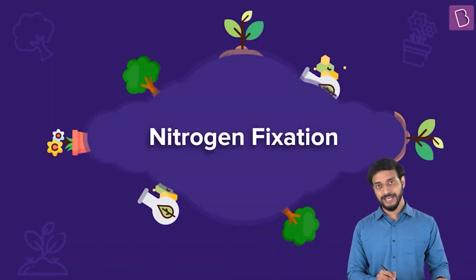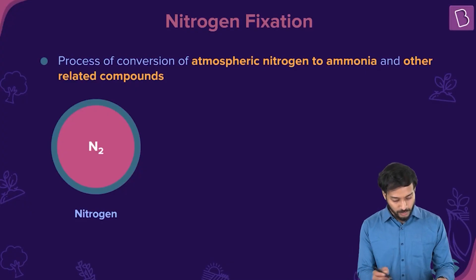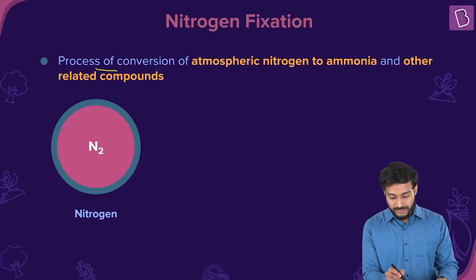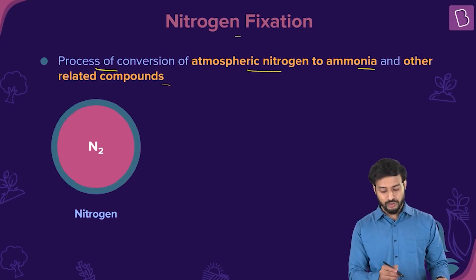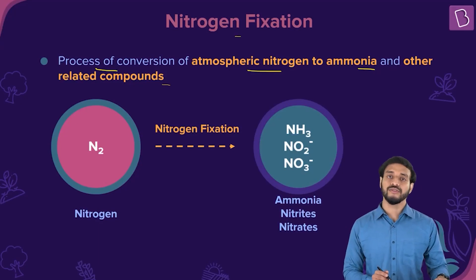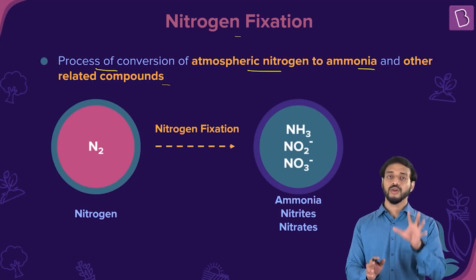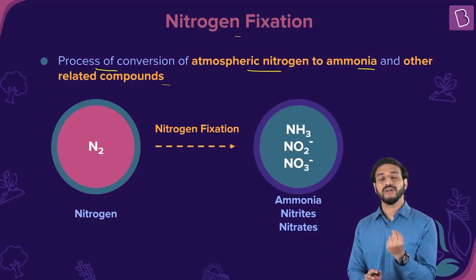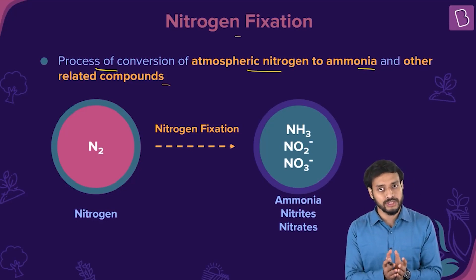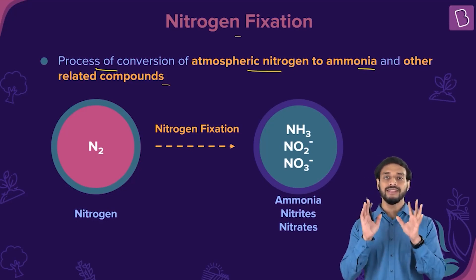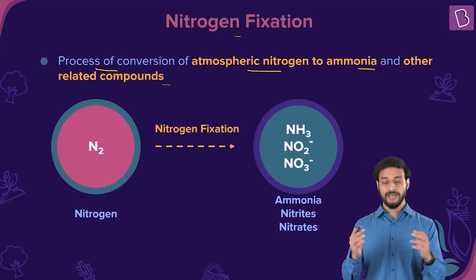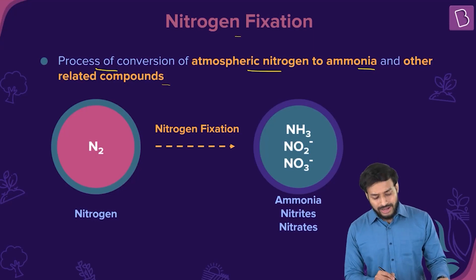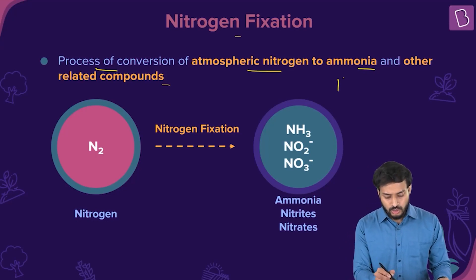Nitrogen fixation is the process of conversion of atmospheric nitrogen to ammonia and other related compounds. This is necessary because plants cannot utilize N2 directly from the atmosphere — it has to be fixed, or converted into forms which can be utilized by the plant. That's simply nitrogen fixation.